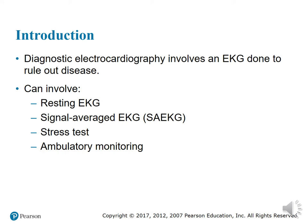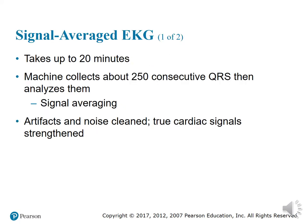These tests can involve resting tests, signal average EKG, stress tests, and ambulatory monitoring. The signal average EKG takes up to about 20 minutes. The machine collects about 250 consecutive QRS complexes and then analyzes them all.